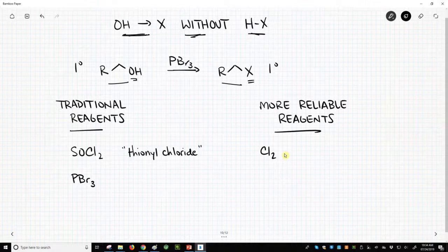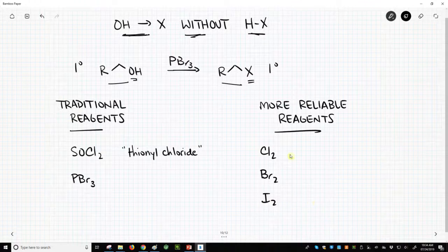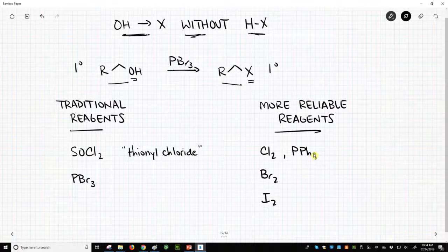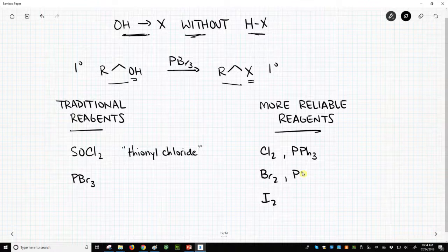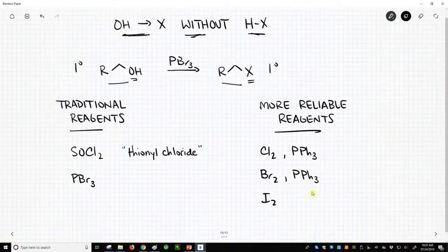All of them involve using the dihalide Cl2, Br2, or I2 with another reagent called triphenylphosphine. So PPh3, that's a capital P for phosphorus, and then a Ph for phenyl, a benzene ring, and there's three phenyls.